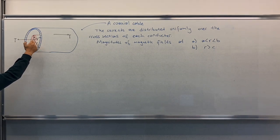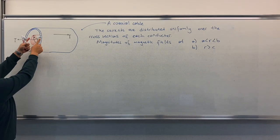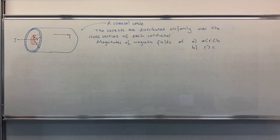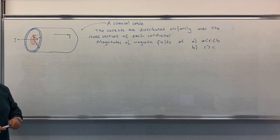In the inside we have the current to the left and to the right on the outside of the conductor. They are separate conductors. The currents are distributed uniformly over the cross-sections of each conductor.